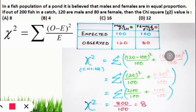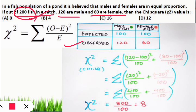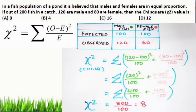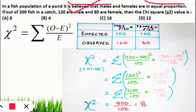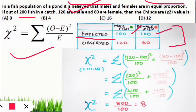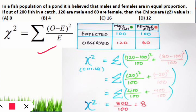Reading the question: out of 200 fish caught, 120 are male and 80 are female — these are the observed values. The question also states it is believed males and females are in equal proportion, so since 200 fish were caught, the expected value is 100 males and 100 females. If you can correctly build this table of observed and expected values, you will be able to solve any chi-square test question.